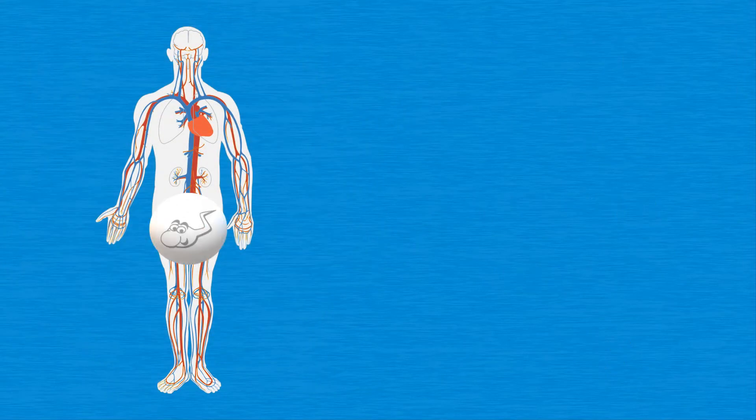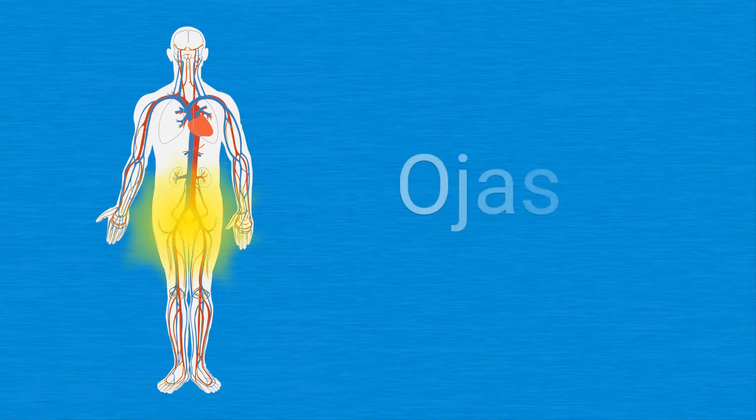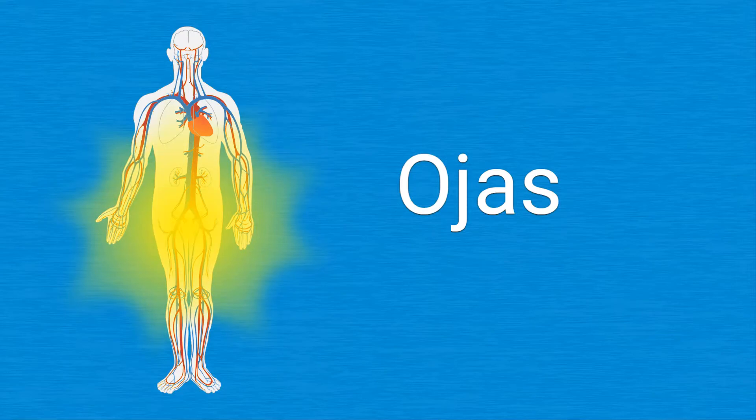When preserved and reabsorbed, this shukra transforms into something called ojas and gets circulated all over the body. This is the most potent energy present in each cell of the body.